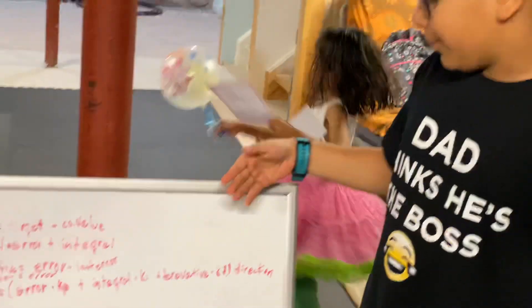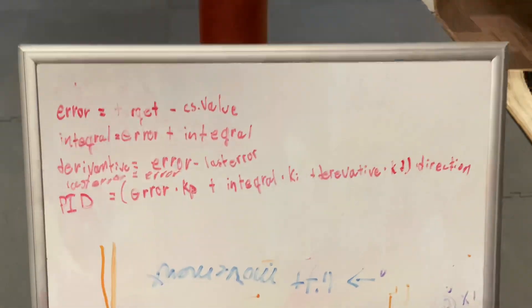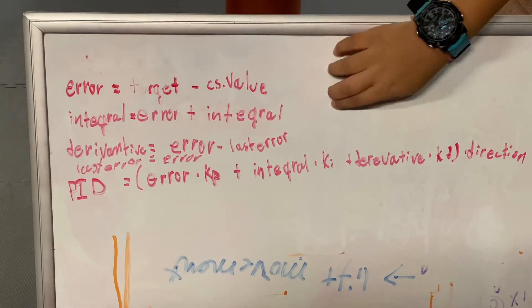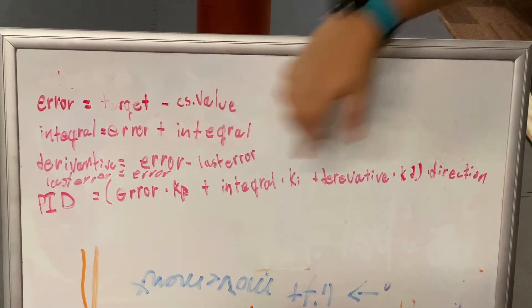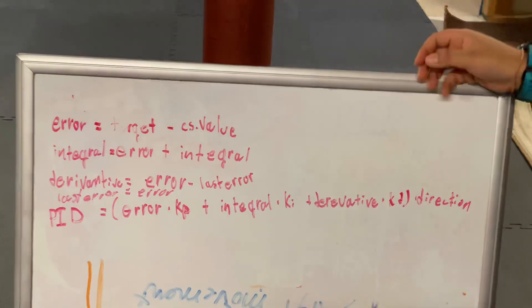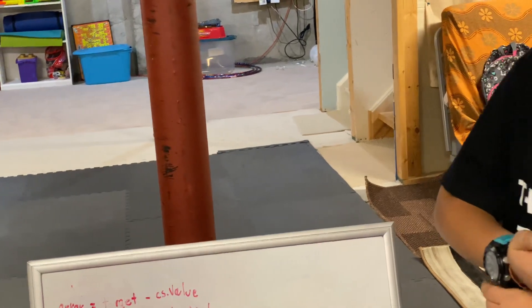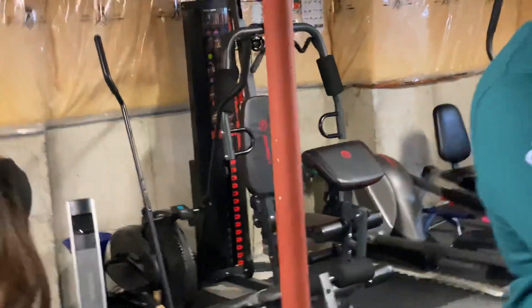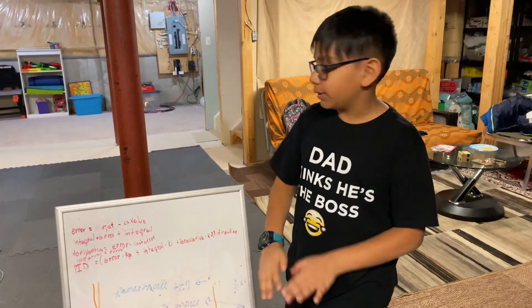The third part is Derivative. It tries to predict what our next error is going to be. It takes our current error and subtracts the last error. At the start, our last error is zero, so the derivative is just the error. Then we set last error equal to current error so it becomes the previous error on the next loop. The derivative value is generally not too high — what we want to know is that the error is going down, not increasing.